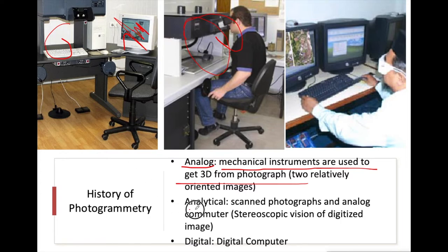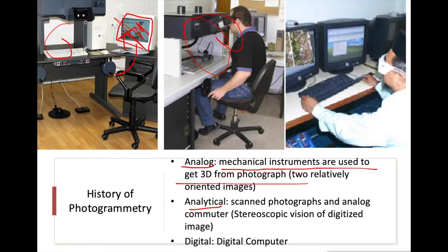Analytical photogrammetry is when we take a photograph, scan it and convert it into digital form, then try to get 3D information from that digitized photograph. Here we are mixing both mechanical instruments and digital tools together.